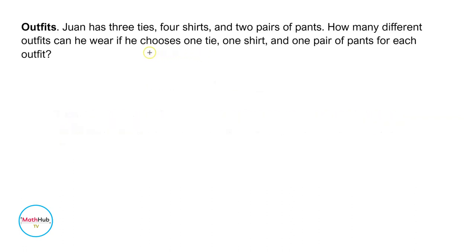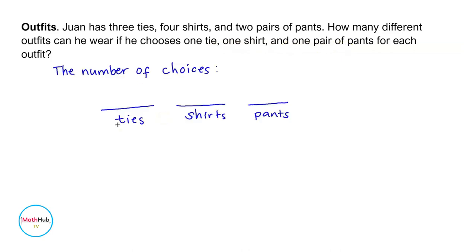Notice that an outfit would consist of one tie, one shirt, and a pair of pants. Therefore, compute for the number of choices for the ties, shirts, and pants.